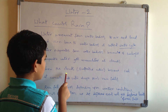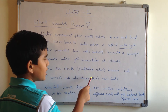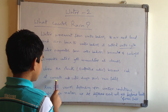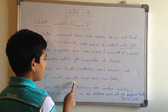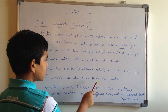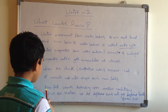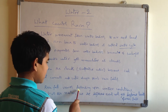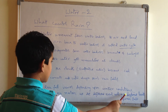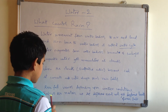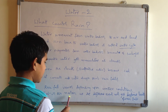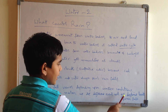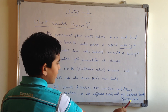When the clouds become cool, it converts into water drops, thus rain falls. Rainfall varies depending upon weather conditions. That is the reason we see different areas will get different levels of rainfall.